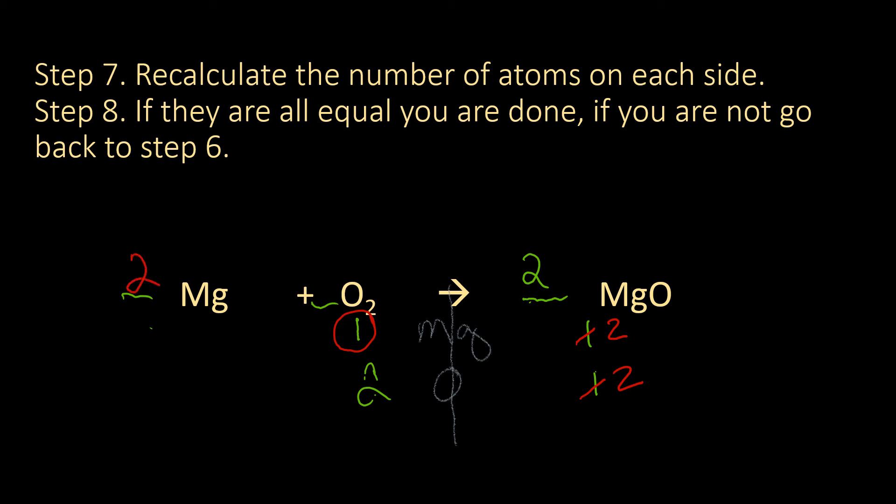So now we need to recalculate, and we will go two times one is two, and that was the only thing that was changed. So now I'm even, I have two on each side.